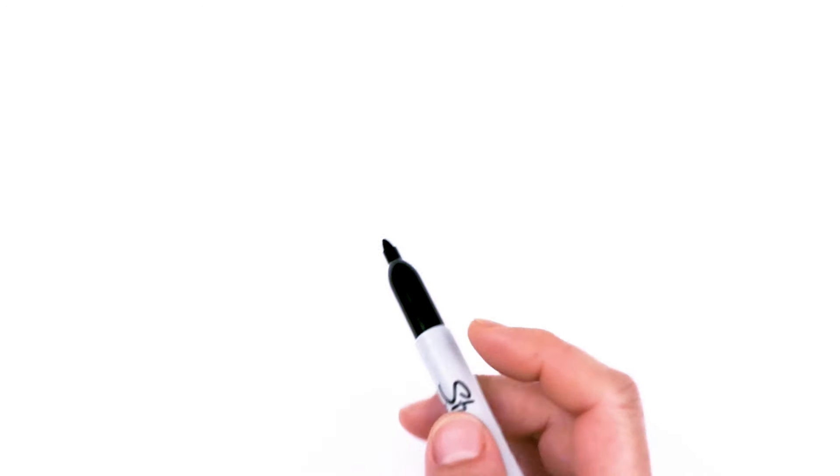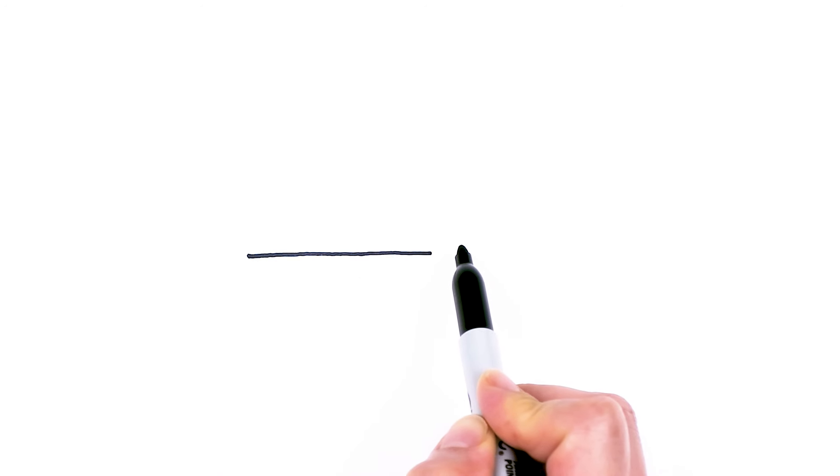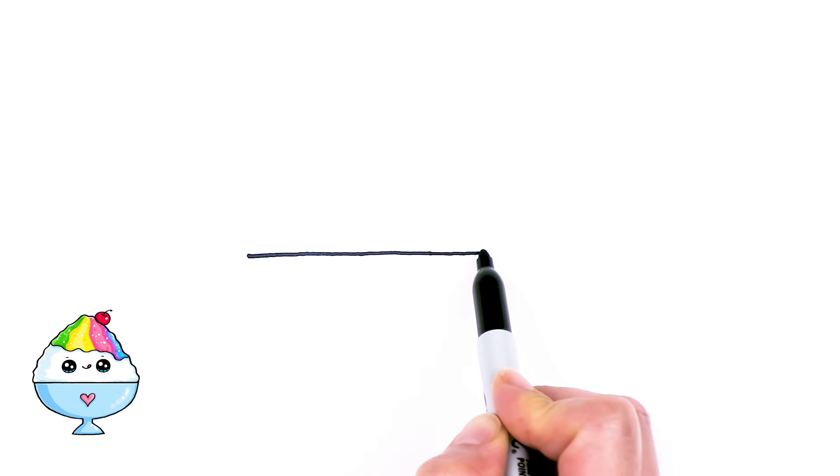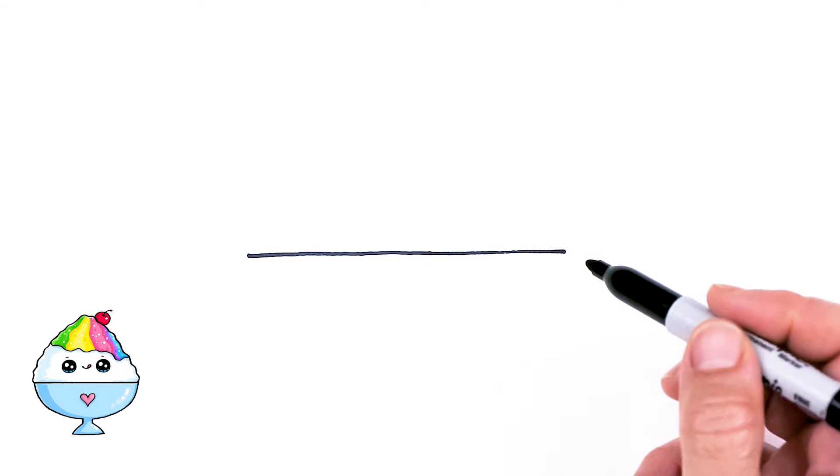To draw this super yummy dessert, let's first start by drawing the bowl. I'm going to start about right here and draw a straight line across for the top of my bowl. I'm just going to go straight across, looking at my camera to make sure I'm going straight, and say about right there how wide I want my bowl to be.